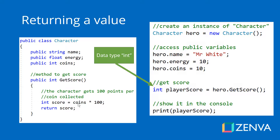When we actually call that method, we declare a variable called playerScore, and set it equal to hero.getScore. When we call hero.getScore, the getScore method runs and returns an integer, and that integer is placed in our playerScore. Then we can show that to the user or do anything we want with it.